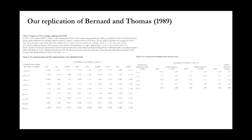Big institutional investors want something uncorrelated from common risk factors. Therefore, the point of going over this paper is to understand post earnings announcement drift in order to discern whether the alpha you're producing is simply a result of PEAD or whether it is truly uncorrelated with post earnings announcement drift and other common risk factors.